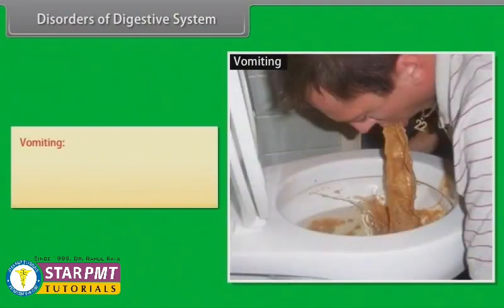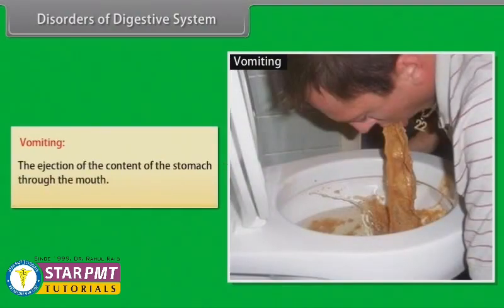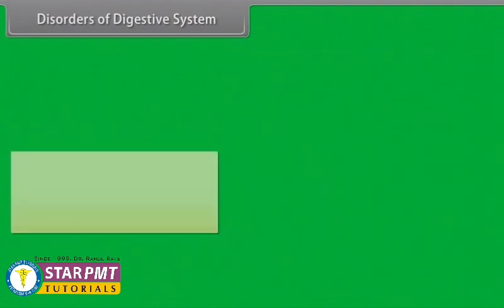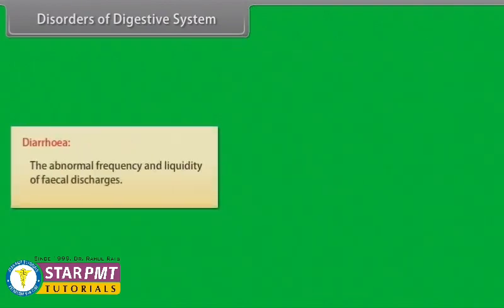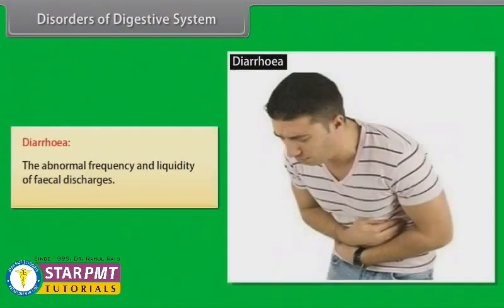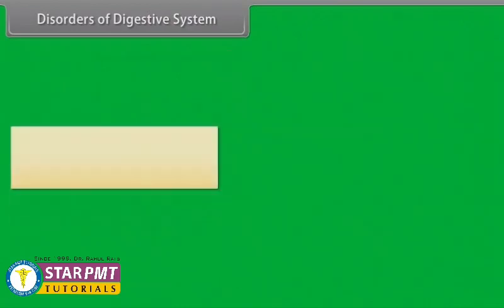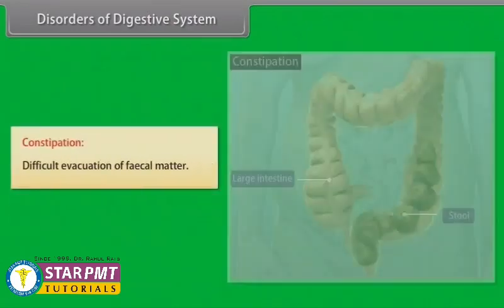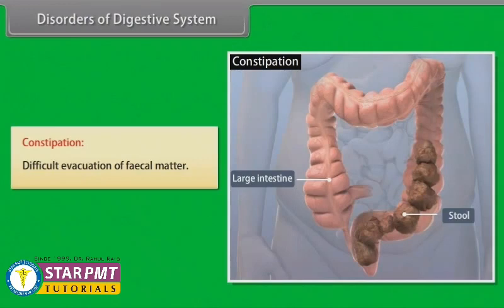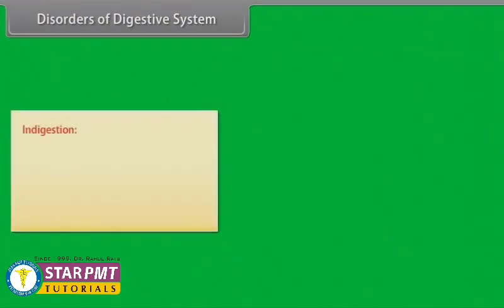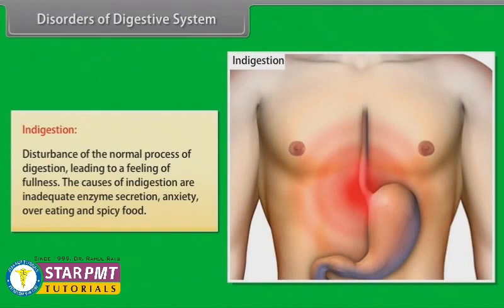Vomiting is the ejection of the contents of the stomach through the mouth. Diarrhea is the abnormal frequency and liquidity of faecal discharges. Constipation is the difficult evacuation of faecal matter. Indigestion is a disturbance of the normal process of digestion leading to a feeling of fullness.